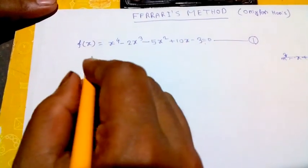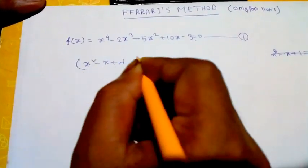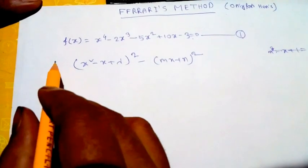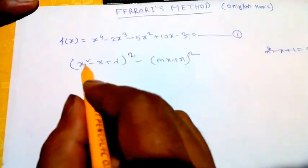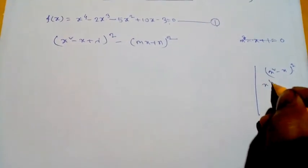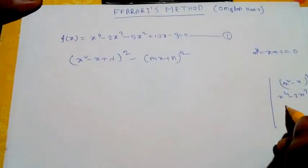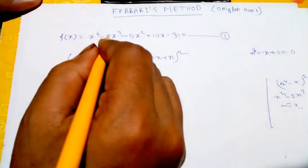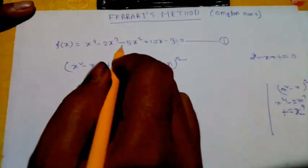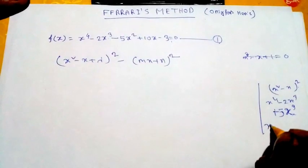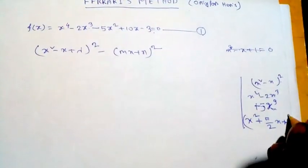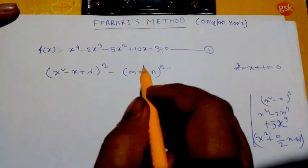In Ferrari's method, we consider the function as (x² - x + λ)² - (mx + n)² = 0. The reason we choose this form is based on the coefficient of x³. If we square (x² - x), we get x⁴ - 2x³. If instead the coefficient were 5x³, we would take (x² + (5/2)x + λ). This choice of λ is common to all problems in Ferrari's method.